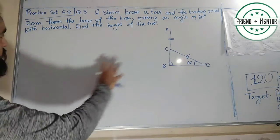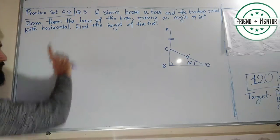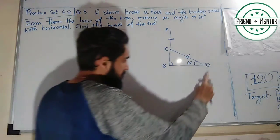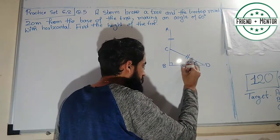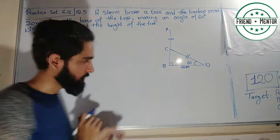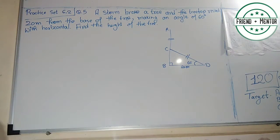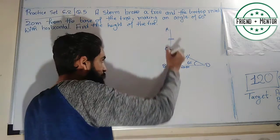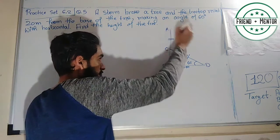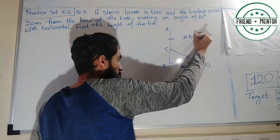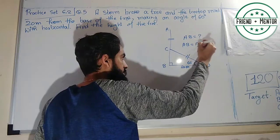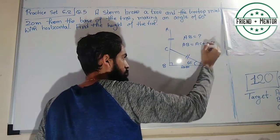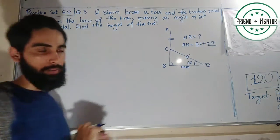The top rested 20 meters from the base of the tree — that is the horizontal distance. We need the height of the tree. AB is the total height, which equals AC plus CB. We will find both parts. It will be easier to find CD first, then use that value since CD equals AC.